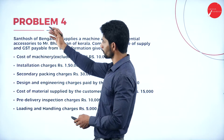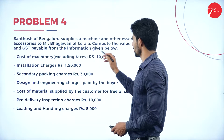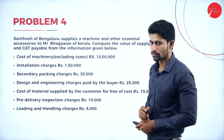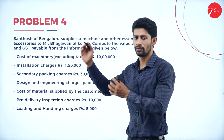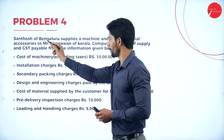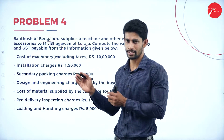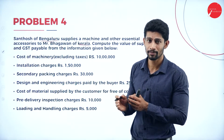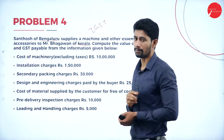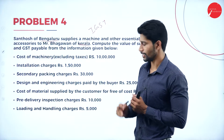Moving on to problem number 4. Santosh of Bengaluru supplies a machine and other essential accessories to Mr. Bhagawan of Kerala. First, we have to understand from where to where the transaction is happening — it is happening from Bengaluru to Kerala. If the transaction is happening between two states, IGST is applicable. So IGST is applicable here.